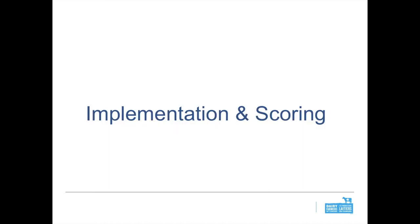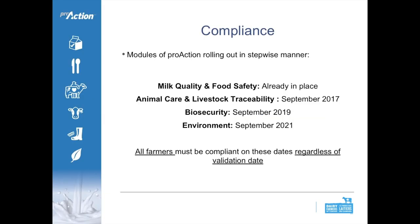Building on implementation and scoring for the biosecurity section of Pro-Action: the modules have been rolled out in a stepwise manner. Most importantly, all farmers must be compliant on these dates. For biosecurity, that's September 2019, and producers must be compliant regardless of their validation date. If a validator comes on farm on September 1st, 2019, the producer must already be in compliance with biosecurity requirements, continuing in perpetuity as Pro-Action rolls along.